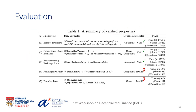To evaluate our approach, we defined five properties of interest relevant to all tokens, Compound, Curve, and the composition of Curve and Compound protocols. Our modeling and verification technique allowed us to identify two violations of these properties.